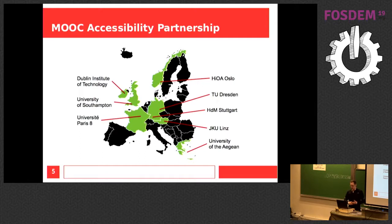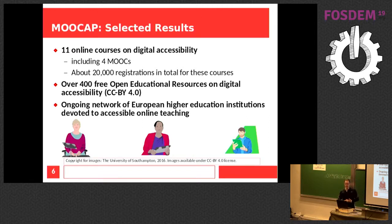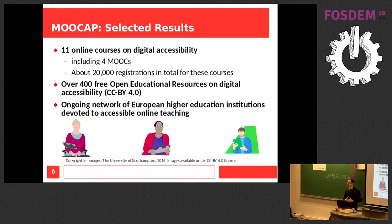What we did in this project — some of the most relevant outputs in this context — is that we created 11 online courses on digital accessibility: one introductory course and then some further courses. Four of these courses were MOOCs — Massive Open Online Courses. There are a few big MOOC platforms like FutureLearn in the UK and Coursera.